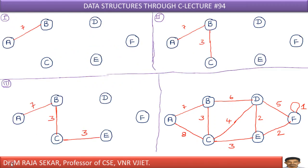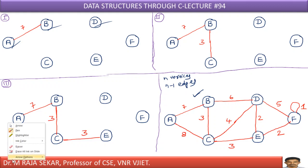According to the definition of minimum cost spanning tree, the tree must contain all n vertices — the number of vertices remains the same — and n minus 1 edges, where n is the number of vertices. In the case of minimum cost spanning tree, I must keep all the vertices. That is why I am keeping A, B, D — all the vertices. There are 3 vertices in this example.